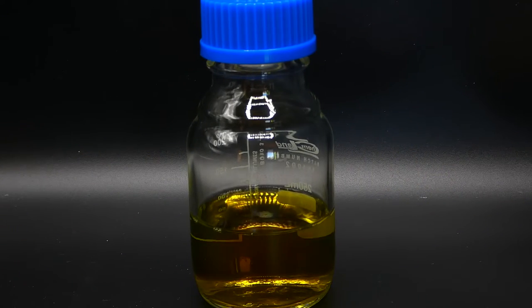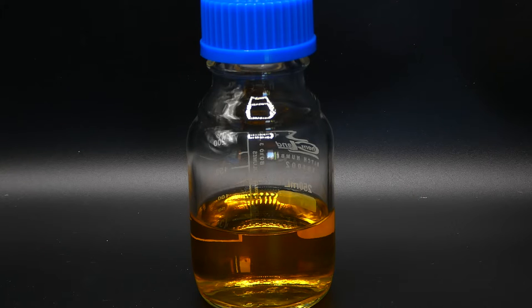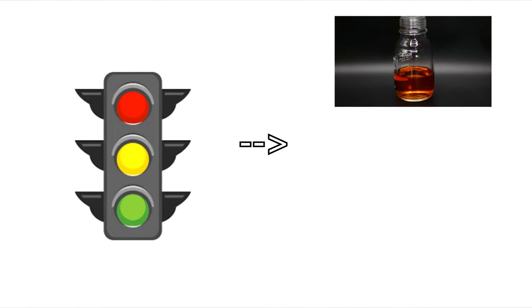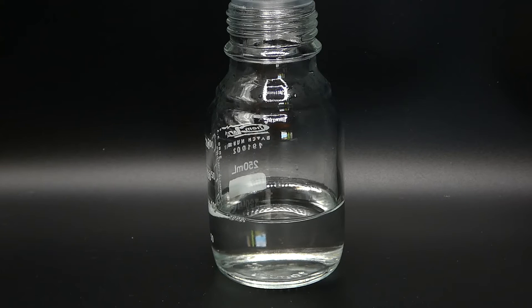Hi guys, welcome to Amateur Chemistry. In today's video I'm going to show you how to make the traffic light demonstration and later I'll explain how it works. The traffic light demonstration is one of the classic school laboratory experiments, and its name comes from the colors generated by the reaction which resemble the traffic light.